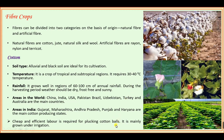Cotton is grown mainly with the help of irrigation because the climate should be neither very humid nor very dry. All the requirements of proper irrigation facility must be met, and this is how cotton cultivation proceeds with irrigation.